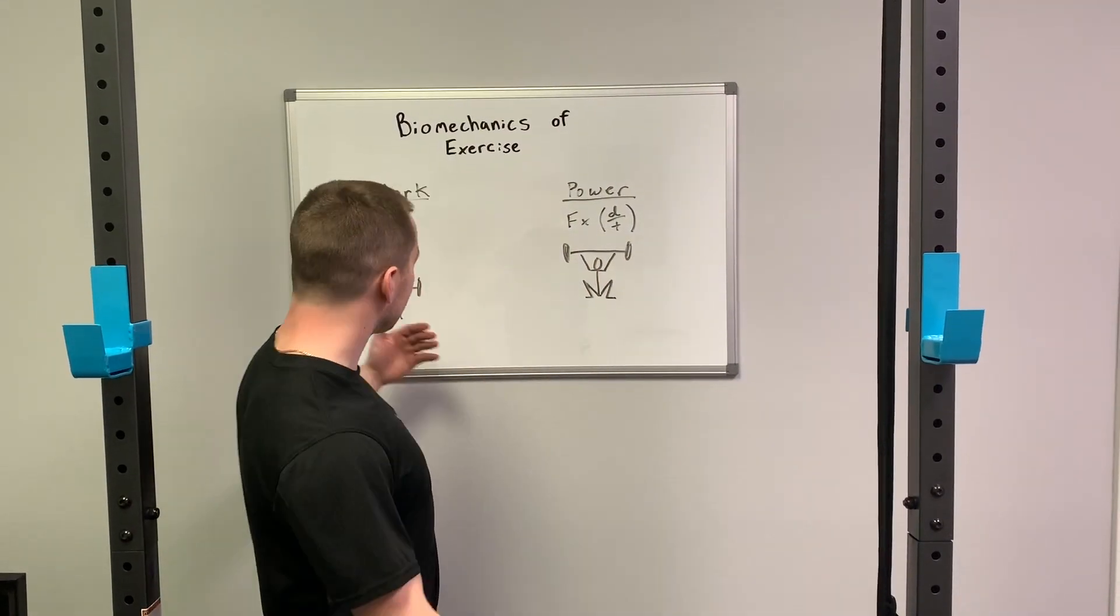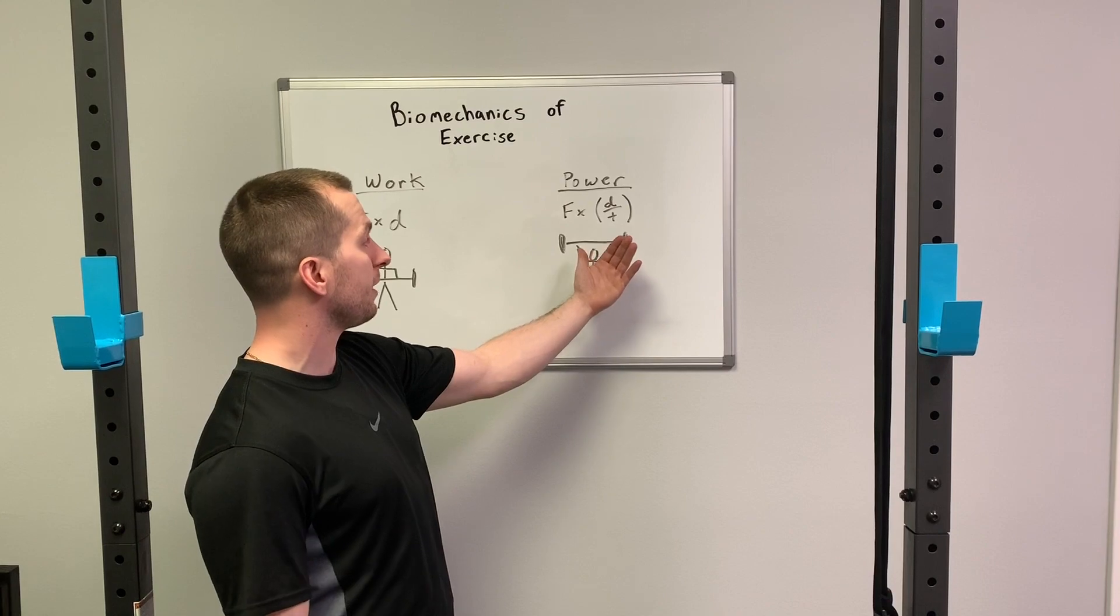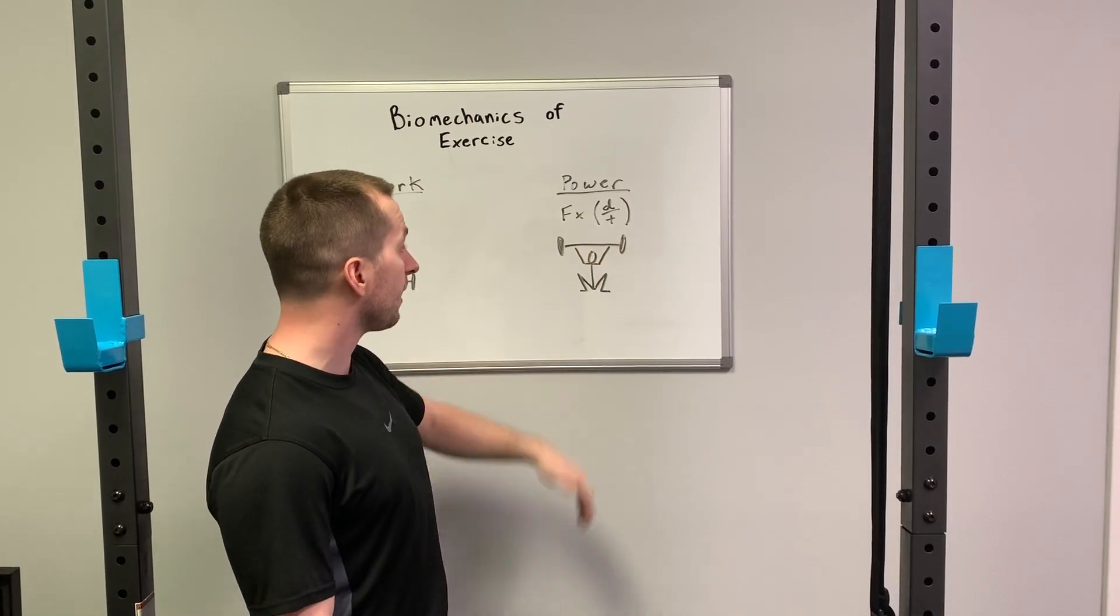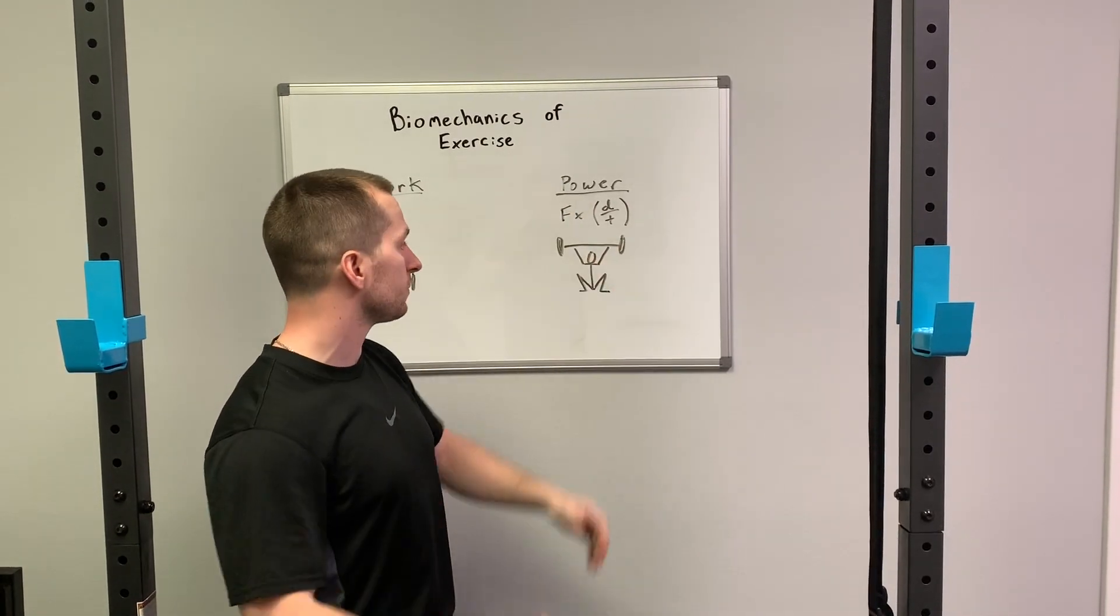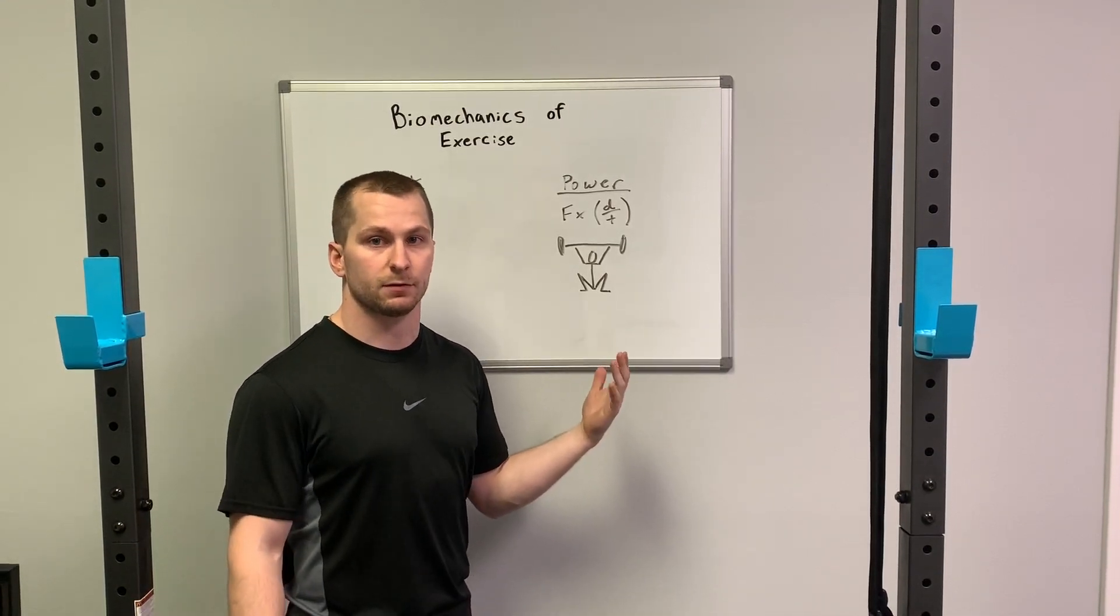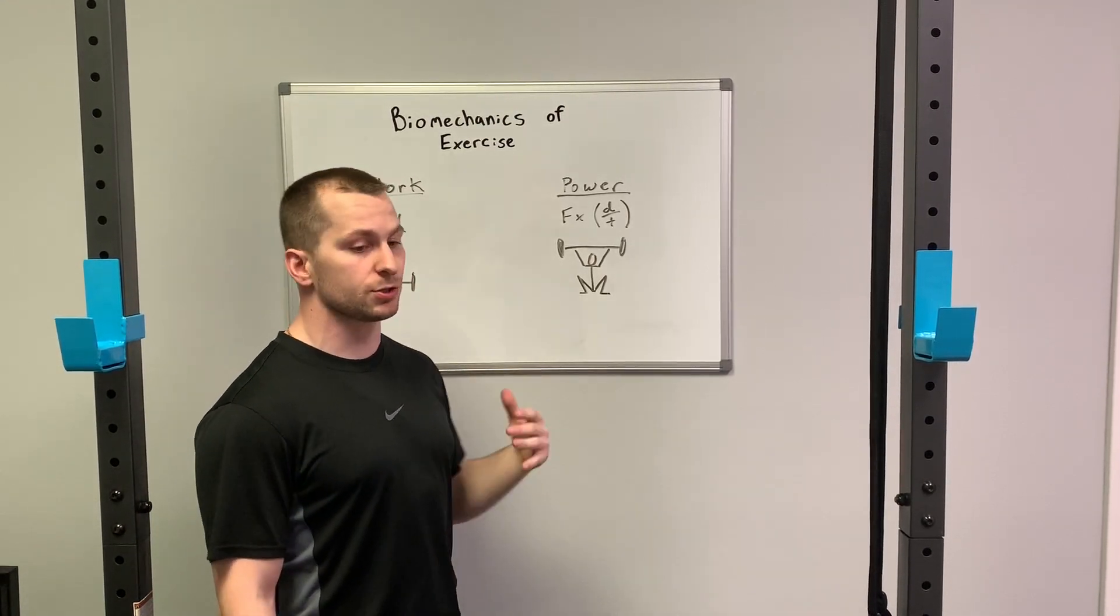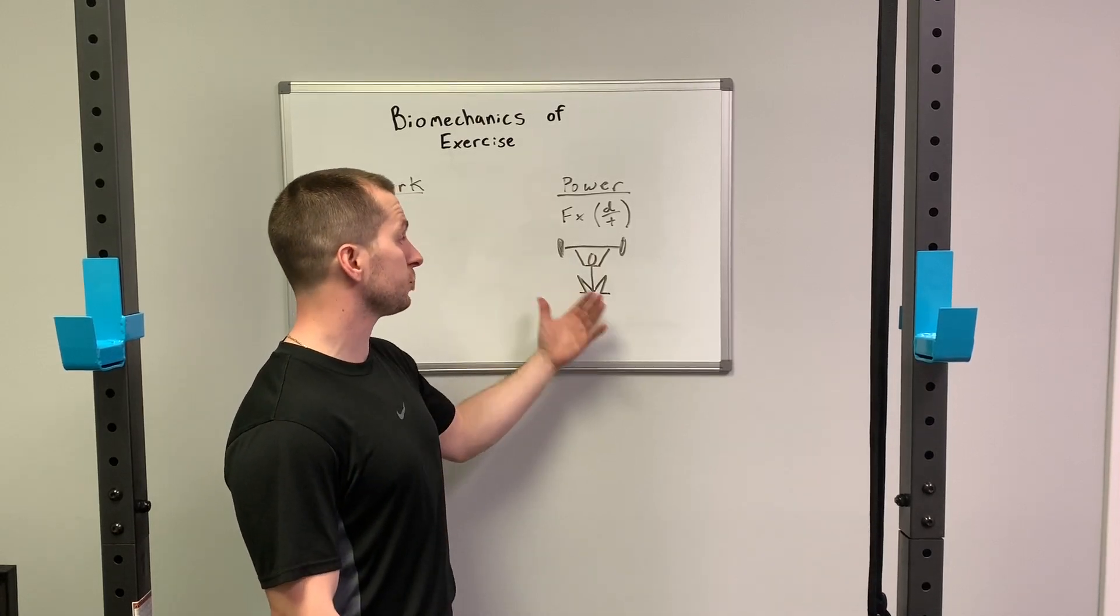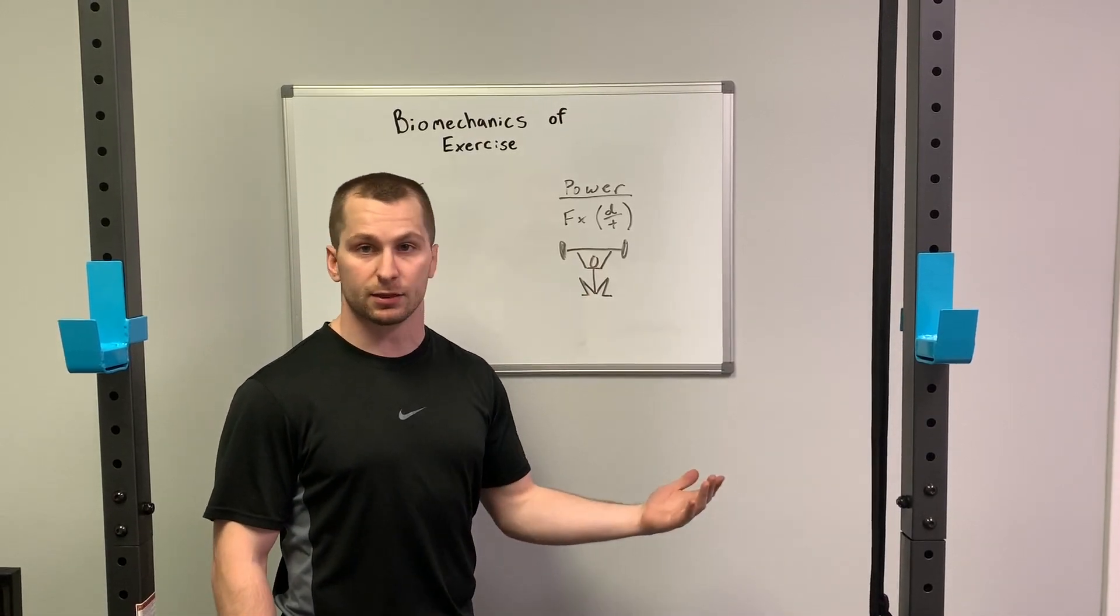That's work, whereas power is essentially the same thing but there's a time component. Power is force times velocity, or distance over time. Think of that as like a snatch or an Olympic lift. You're trying to move that bar as quickly as possible. If you move slowly with this lift, you're not going to get the rep up.